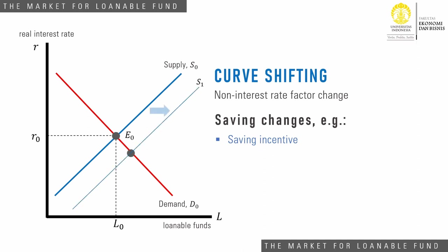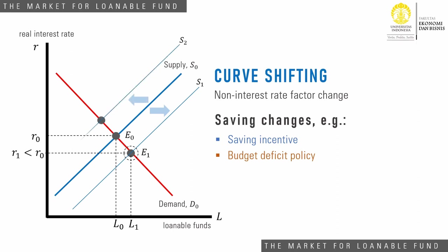The new supply curve will intersect the demand curve at a new point, at a lower equilibrium real interest rate. In another situation, the government may run a budget deficit policy. No matter whether the net spending is for government consumption or investment, the policy affects saving. A budget deficit policy reduces public saving, so national saving will decrease at any given real interest rate, and the supply curve will shift to the left, leading to a higher equilibrium real interest rate.